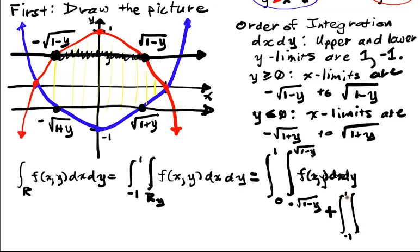f(x,y) dx dy, plus the integral from negative 1 to 1. And in this region, or negative 1 to 0. So I split up the y slices that I'm looking at so I can fix actual limit functions. So this will be 1 plus y, this will be square root 1 plus y,